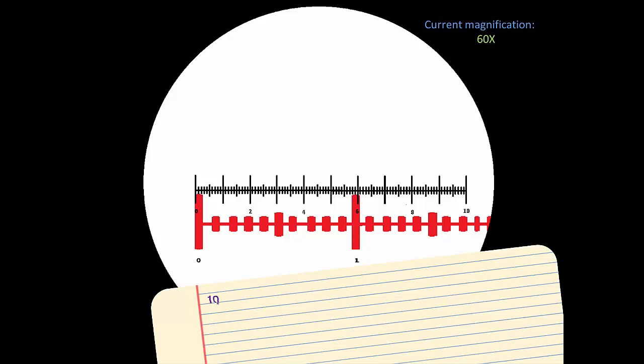The entire length of the stage micrometer, or the red ruler, is equal to 1 mm, which is 1000 microns, which in turn means that 1 stage unit is equal to 100 microns.